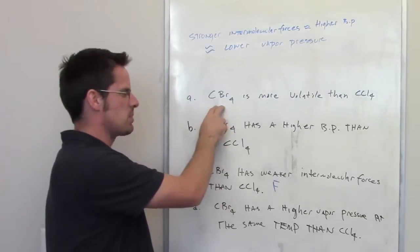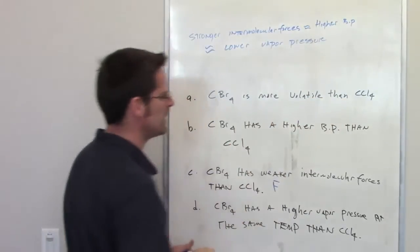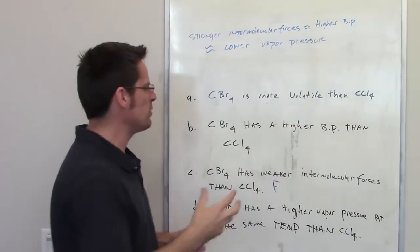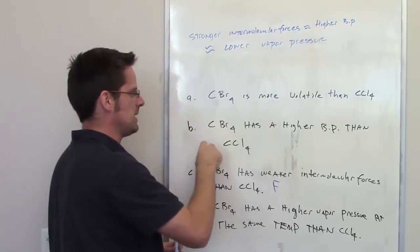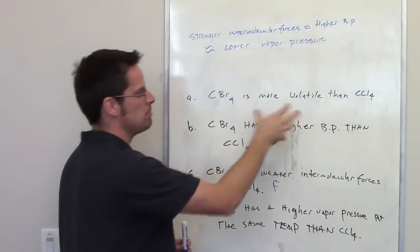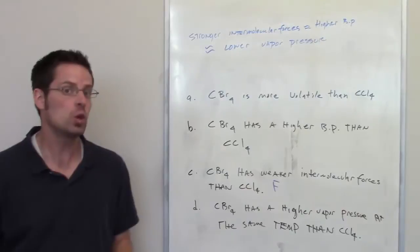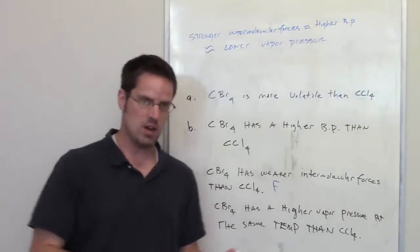Now let's look at this. Carbon tetrabromide is more volatile than carbon tetrachloride? Well, the way to answer that is ultimately to answer part B. Does carbon tetrabromide have a higher boiling point than carbon tetrachloride? You might remember from another video, and I'll link to it here,